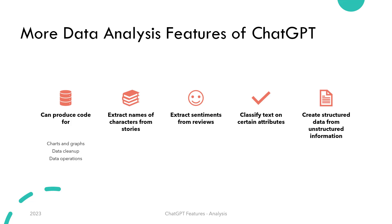ChatGPT can also aid you with creating charts and graphs for the information it has about a topic or dataset. If it can't plot the graph, it would provide you Python code to do so. There are a bunch of operations you can perform on unstructured data and information available online as well — for example, extracting names of characters from stories, extracting sentiment from customer reviews, classifying text based on certain attributes, etc. ChatGPT also provides the ability to create structured information from unstructured data. Finally, you can ask ChatGPT to provide the code it used to perform any of these operations and it would happily provide that code to you.